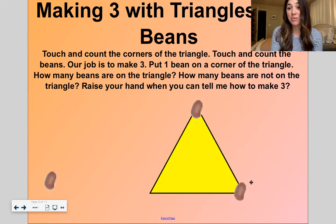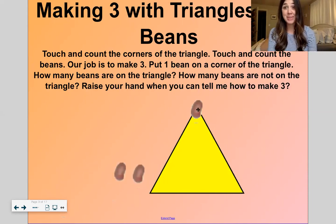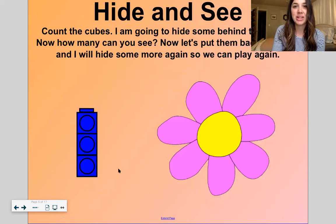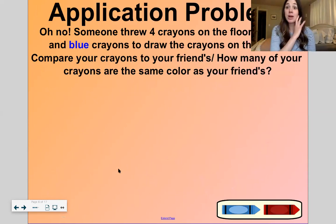So we can make 3 by saying, here, let me move closer. One bean on the triangle. Two beans not on the triangle. One and two make 3. You got it. All right, we're going to skip over these ones today and then we'll go right to our application problem.